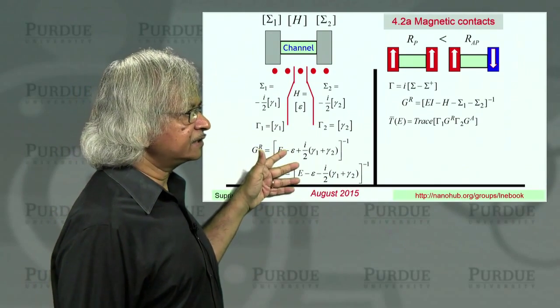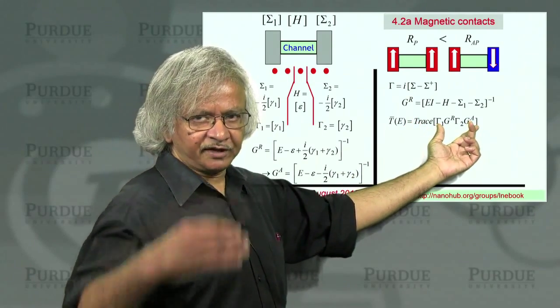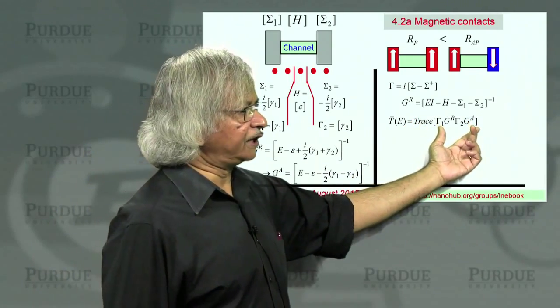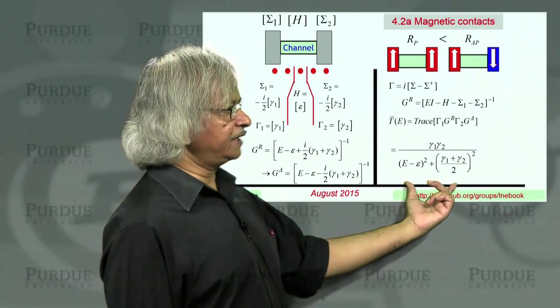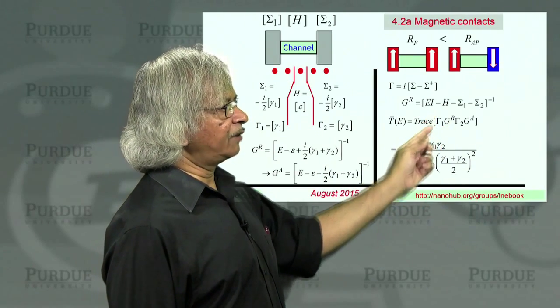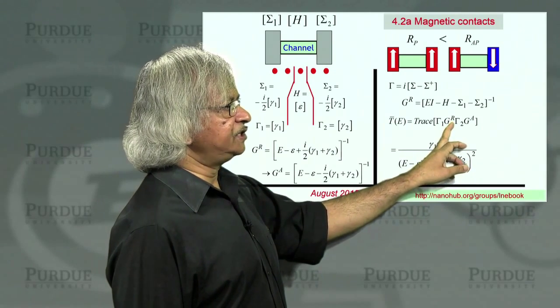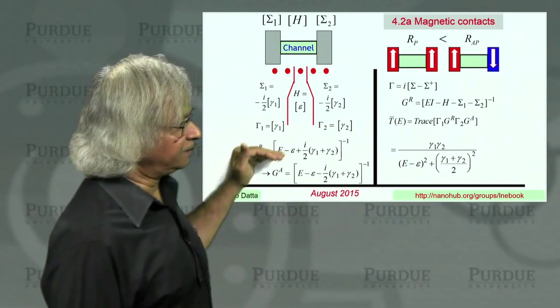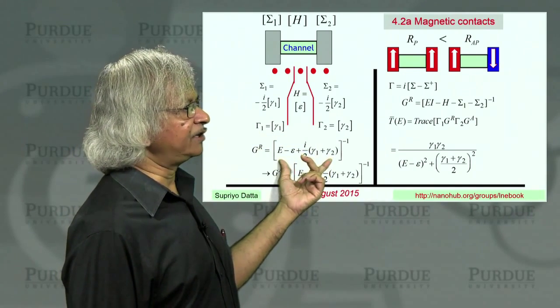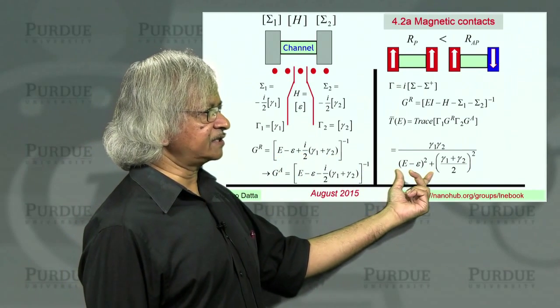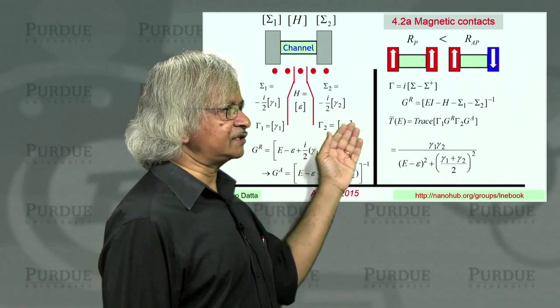Now what's Ga? That's this conjugate transpose of Gr. And again, transpose doesn't matter. It's just a number. So you want conjugate. So plus i becomes minus i. That's it. Now you take all that, and you can put it in here. And again, trace simply means this number. Because trace is the sum of everything on the diagonal. So you just have to multiply out those four quantities. And when you do that, you'll get this.